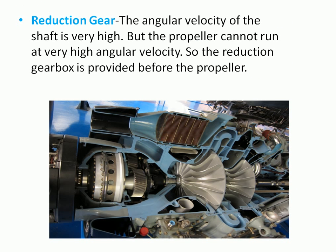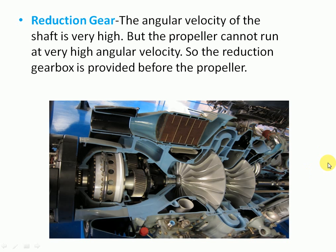Next, the reduction gear. A gearbox is assembled here. The reduction gear is used in the turbo propeller engine because the angular velocity of the shaft is very high. The turbine is a rotating device used to drive the compressor by means of the shaft. The angular velocity of the shaft is very high, but the propeller cannot run at very high angular velocity — so we have to use a reduction gearbox before the propeller.